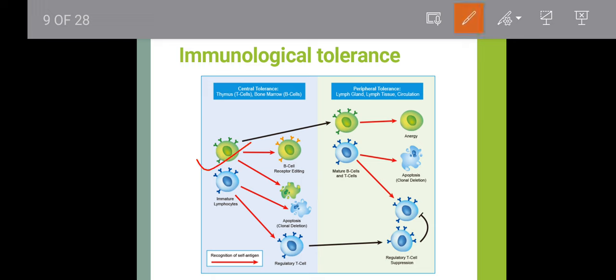In the diagram, the B-cell undergoes tolerance by B-cell receptor editing or apoptosis. If a self-reactive B-cell escapes central tolerance, it is captured in peripheral tolerance and eliminated by anergy, apoptosis, or other mechanisms so it does not produce an immune response against self-antigen. For T-cells, apoptosis and regulatory T-cells handle central tolerance, and any self-reactive T-cell escaping central tolerance is captured by peripheral tolerance mechanisms.